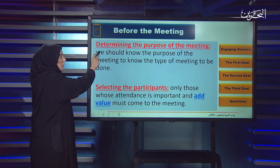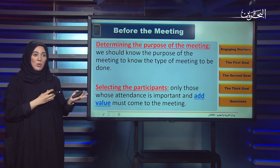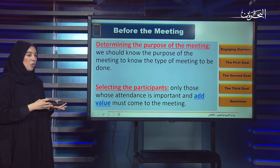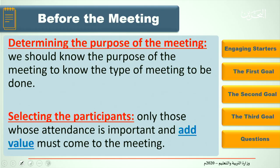First, determining the purpose of the meeting — or the objective. We must know the purpose of the meeting, why we are holding it, so that we can choose the best type of meeting, as mentioned in the previous lesson — either a formal meeting, an informal meeting, or an electronic meeting.